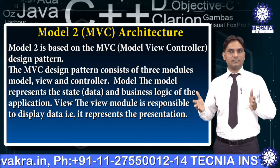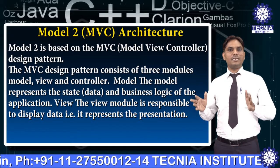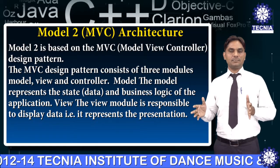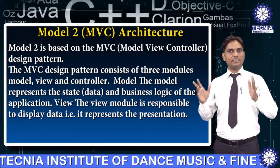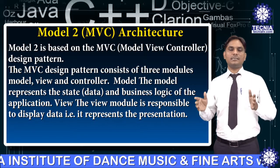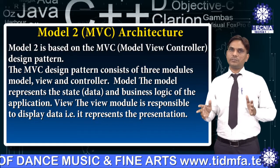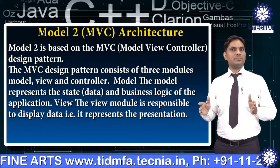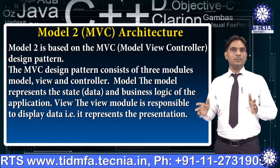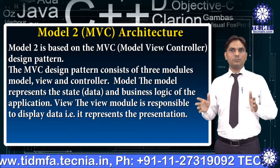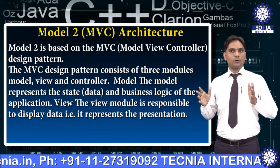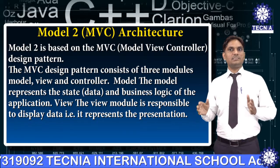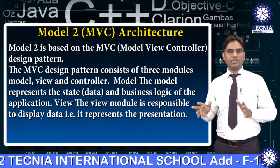Number 2 architecture is MBC architecture. Model 2 is based on the MBC Model-View-Controller design pattern. It consists of three modules: Model, View, and Controller. The model represents the state, data, and business logic of the application.